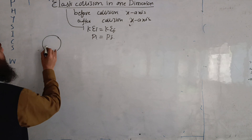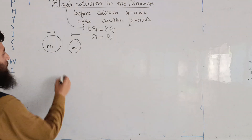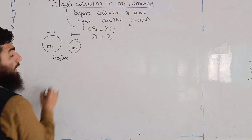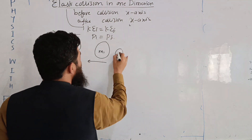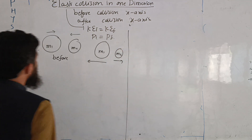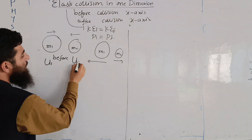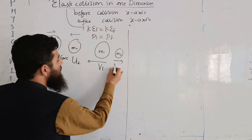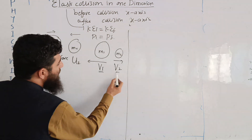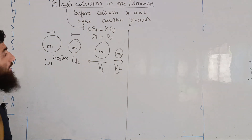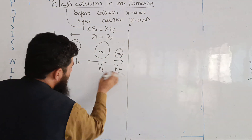Suppose one body has mass m1 and the other has mass m2. Before collision, the two bodies have velocities U1 and U2. After collision, the velocities become V1 and V2. The velocities V1 and V2 are along the x-axis after the collision.